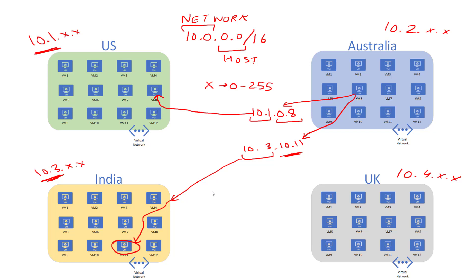That sums up this particular example. We've looked at how network IP addressing can be very powerful — a simple CIDR notation can identify different networks, how many networks can exist, and how many hosts can be there. We can leverage this simple concept to build various complex network designs. In subsequent videos, we'll look at different designs and leverage online calculators to perform these calculations and make the hard work easy.